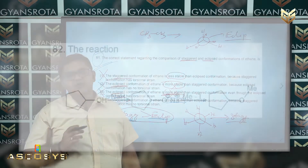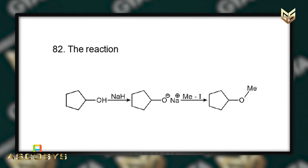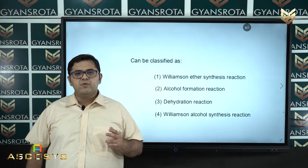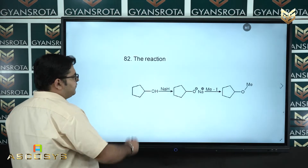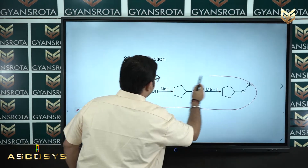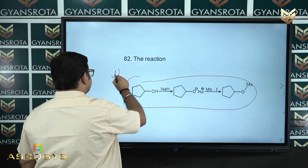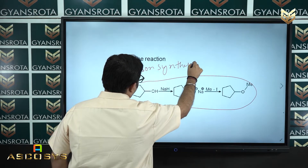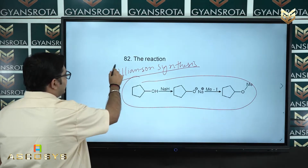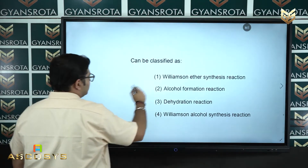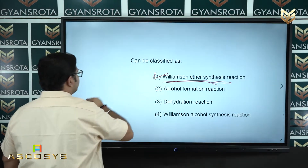Question number 82: the given reaction can be classified as which of the following options? Moving to solution: this reaction is nothing but Williamson synthesis. Looking at the options, option number 1 — Williamson ether synthesis — is the correct answer of this question.